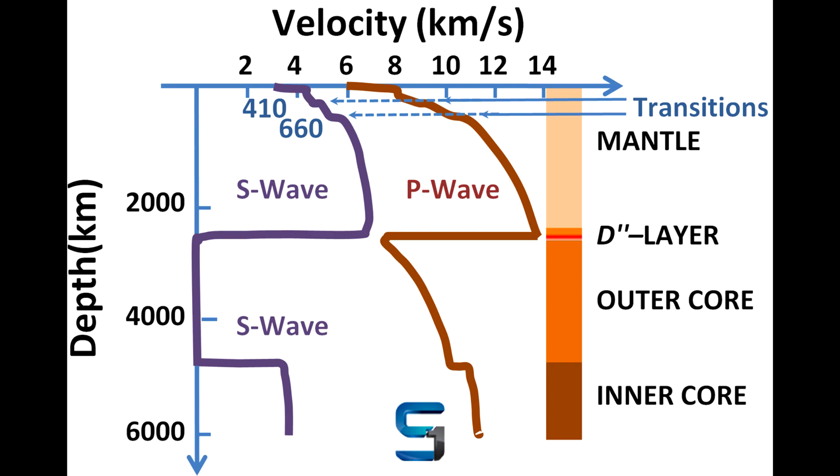Guttenberg correctly reasoned that all this was due to the existence of a molten semi-liquid core. S waves can't travel through liquids at all, which is why they are not seen past 104 degrees.